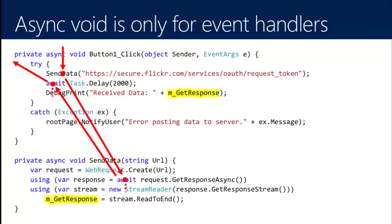If the download finishes first, we process the data and set the m-get-response member field, and when we go to print it, we're fine. But if a two-second delay in button-one-click finishes first while the network is slow and takes five seconds, m-get-response is still blank — the download didn't actually finish. You can imagine how the sample evolved: someone added a delay of 500ms, then 1000ms, then 2000ms trying to guess when the data would be ready. But that's not the right way to synchronize.